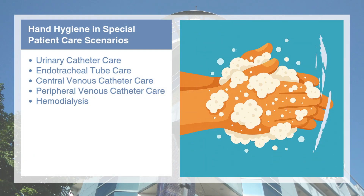Let's look at how the five moments for hand hygiene apply in specific clinical scenarios. Each type of care, whether it involves catheters, tubes, or dialysis lines, has its own critical points where hand hygiene is essential. Adapting the five moments to these situations ensures we break the chain of infection and protect both the patient and the healthcare environment.